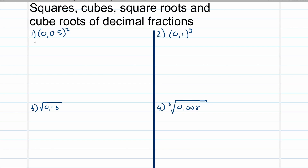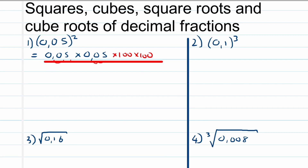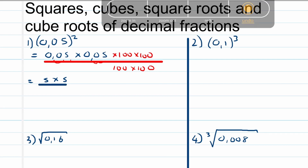So 0.05 squared is 0.05 times 0.05. In order to change these numbers to whole numbers, we can multiply 0.05 by 100 to move the comma two decimal places to the right, and another 100 to move this comma two decimal places to the right. Remember we can't just multiply the numerator without writing down the denominator as well, because we can only multiply with one so that the value stays the same. This means the expression becomes 5 times 5, because 0.05 times 100 is 5.